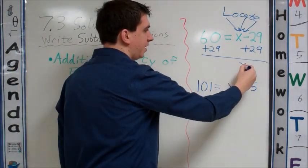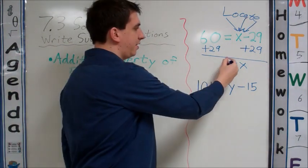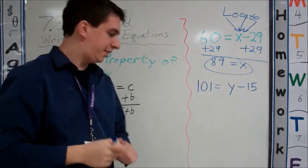So we're left with X on the right side equals 60 plus 29. That's set up vertically. We can do that very nicely here. 89 equals X.